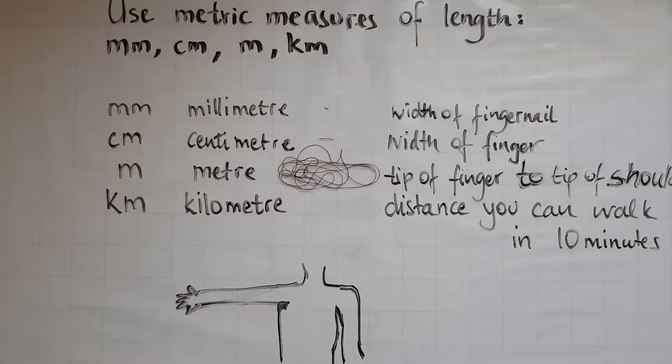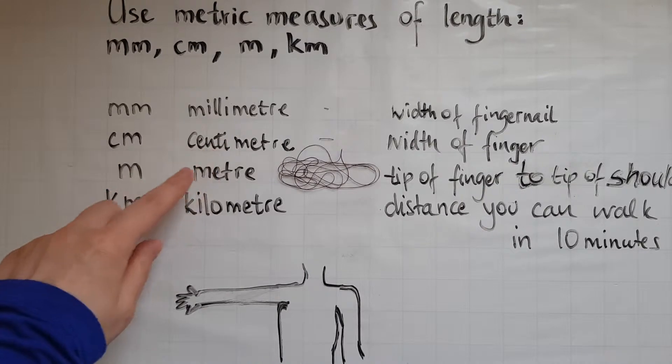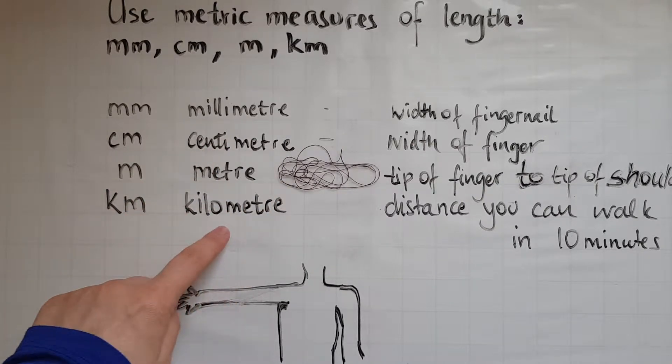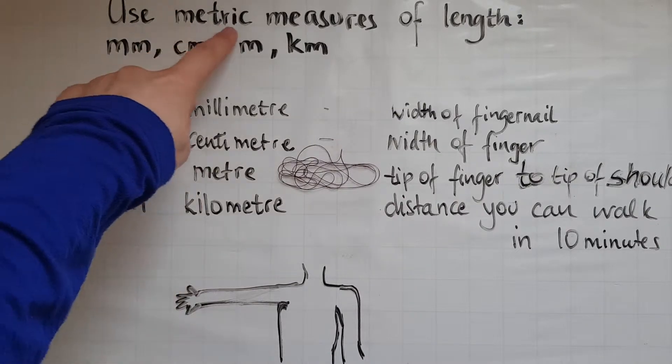Metric measures have a pattern in the way that they're said: millimeter, centimeter, meter, kilometer. They have the word meter in them, just like metric.